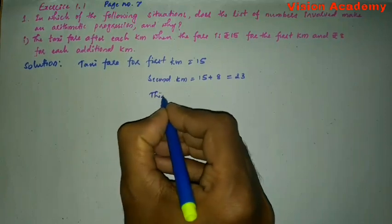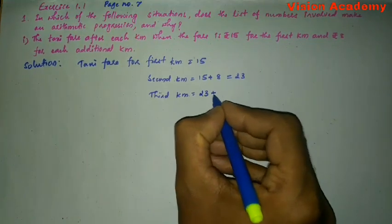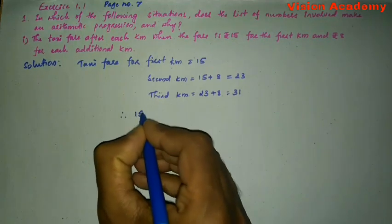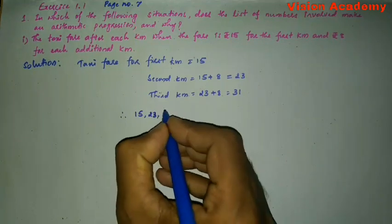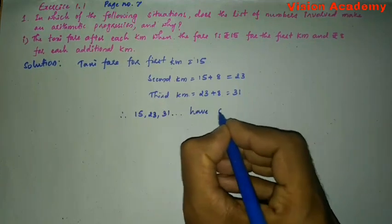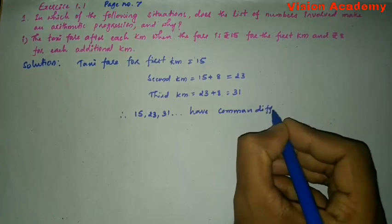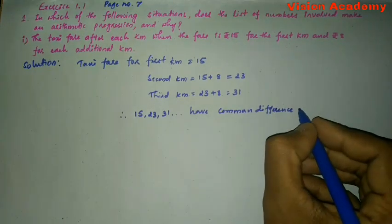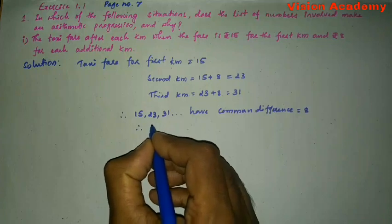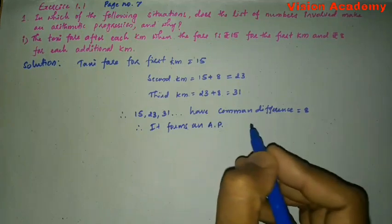For the third kilometer we add 8 to 23: 23 plus 8 is equal to 31. So the numbers 15, 23, 31 and so on have a common difference equal to 8. Therefore it forms an arithmetic progression.